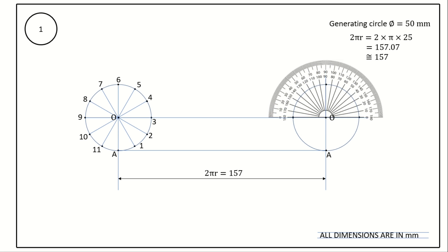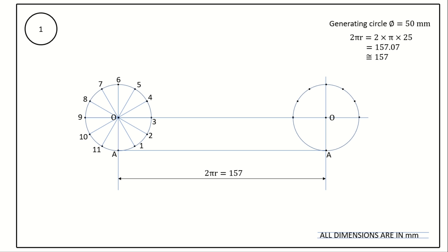Divide the other circle also into 12 equal parts using the same procedure — 30, 60, 90, 120, 150, and 180 degrees. From each angle point, draw a line through O to locate points on the circumference. Letter the points anti-clockwise from A as 1, 2, 3, 4, 5, 6, 7, 8, 9, 10, 11, and A. I have divided the generating circle into 12 equal parts.